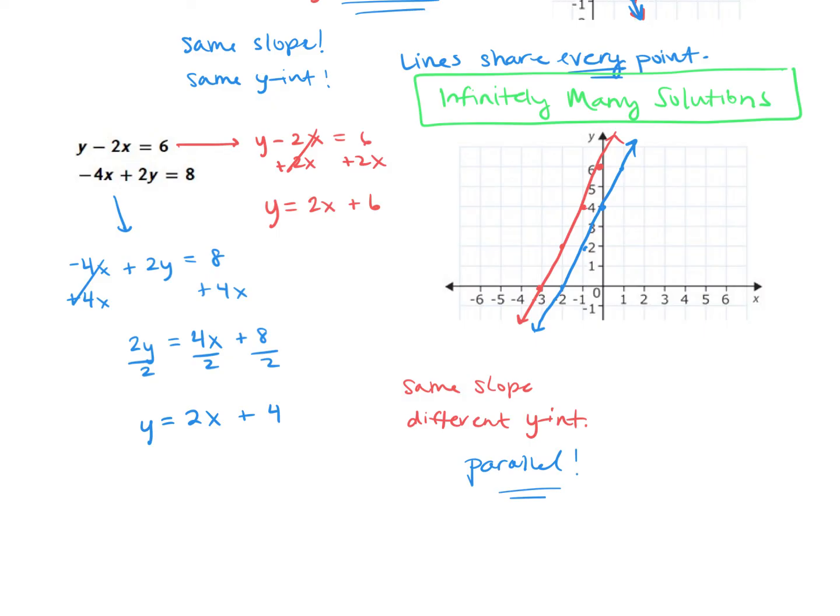So where do these lines cross? Remember the point of intersection is our solution to the system. Well, they don't have any points of intersection. So if you end up with a system where both equations never cross, there is no solution to the system. And that is the answer we would write down.